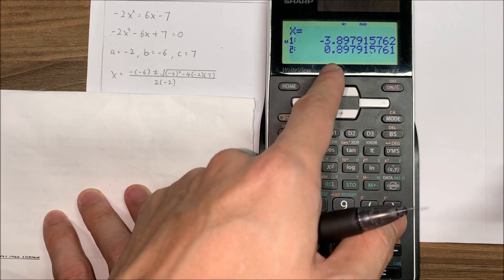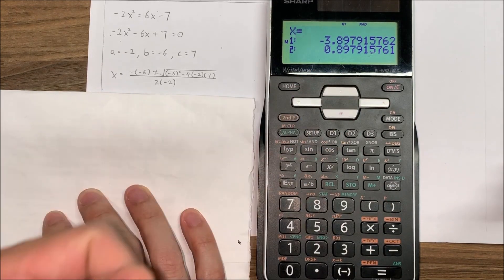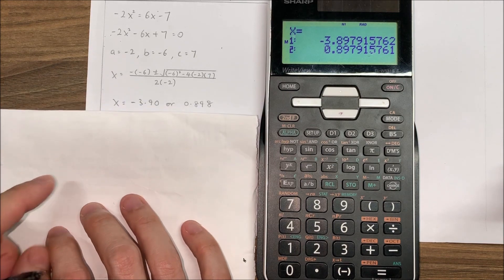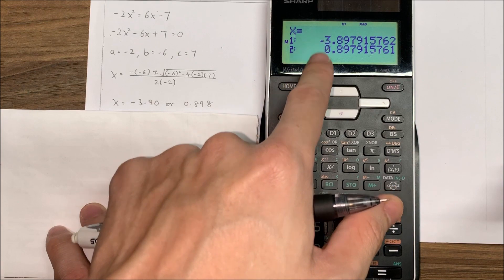Okay, so these are the two answers. And since the question never says what kind of decimal places they require, we're going to do the default 3 significant figures. So this will be the 3 significant figures for these two answers.